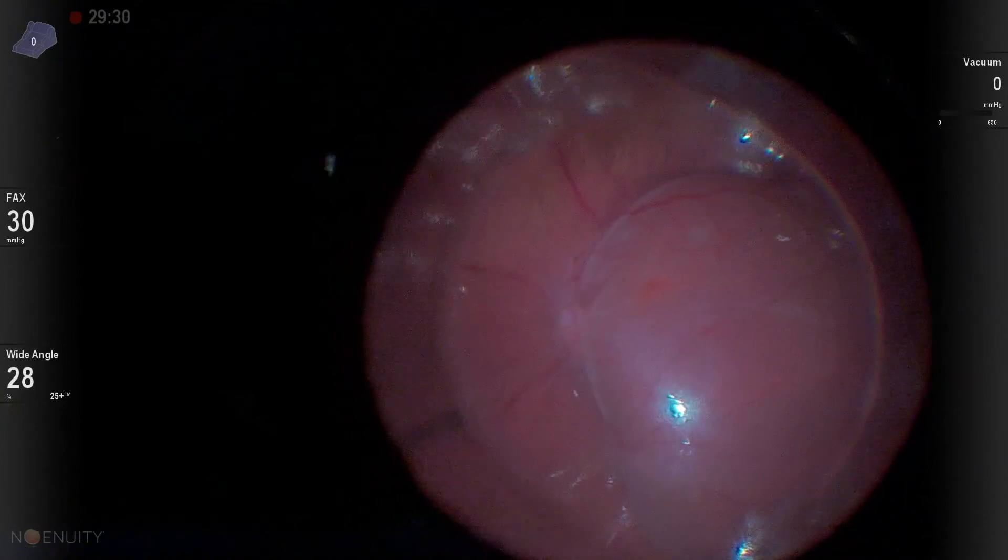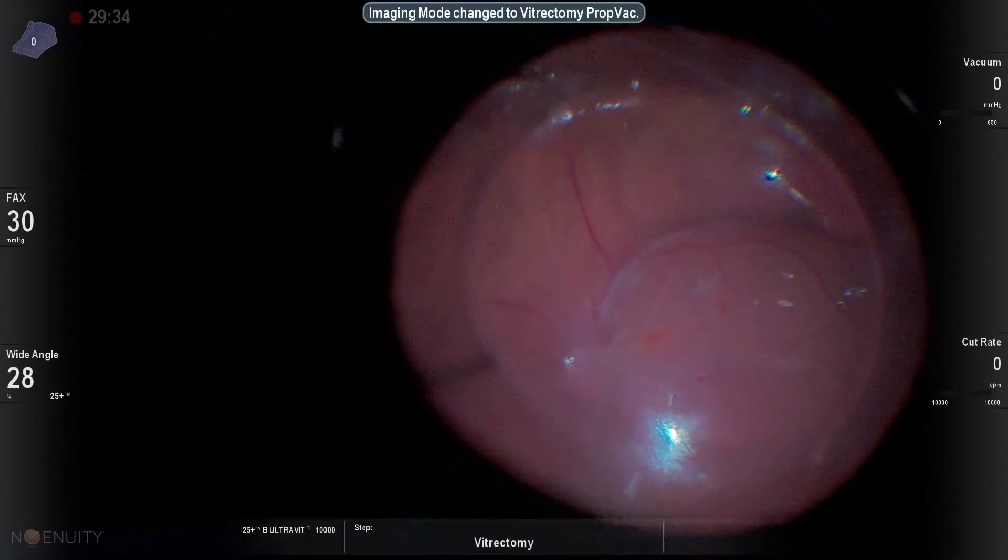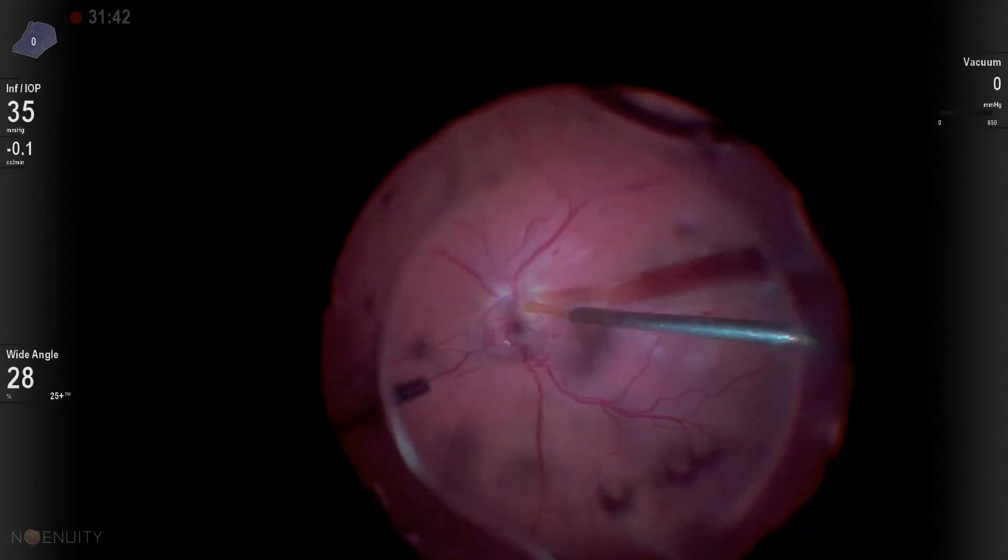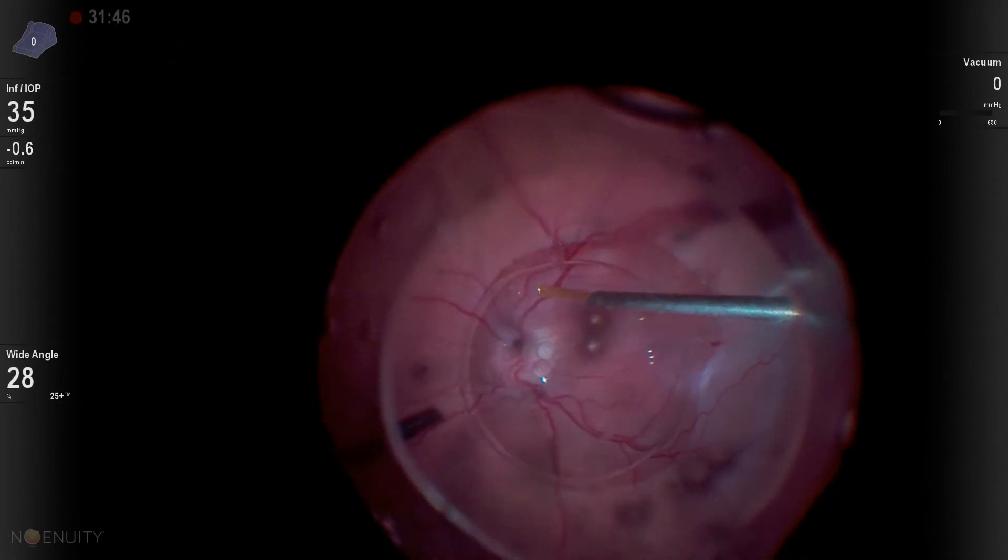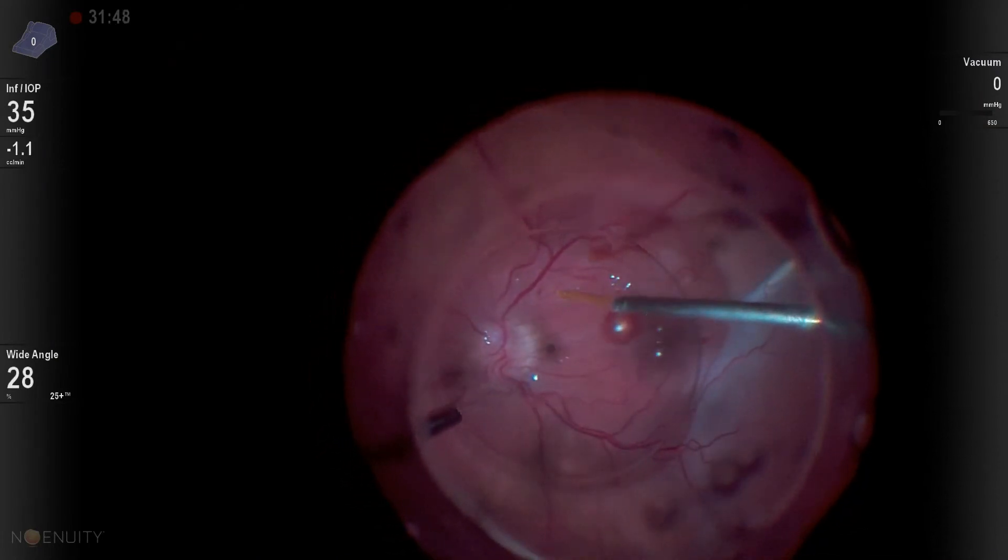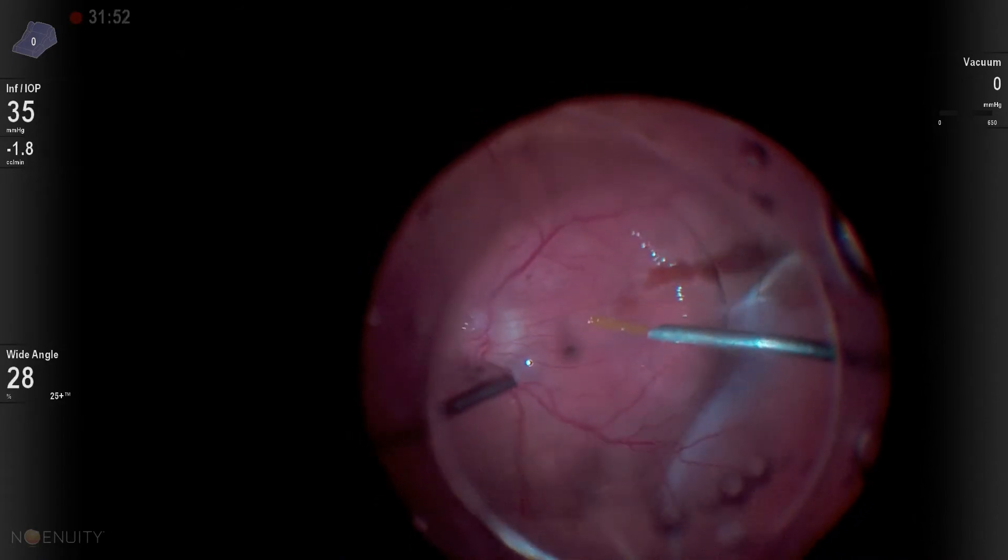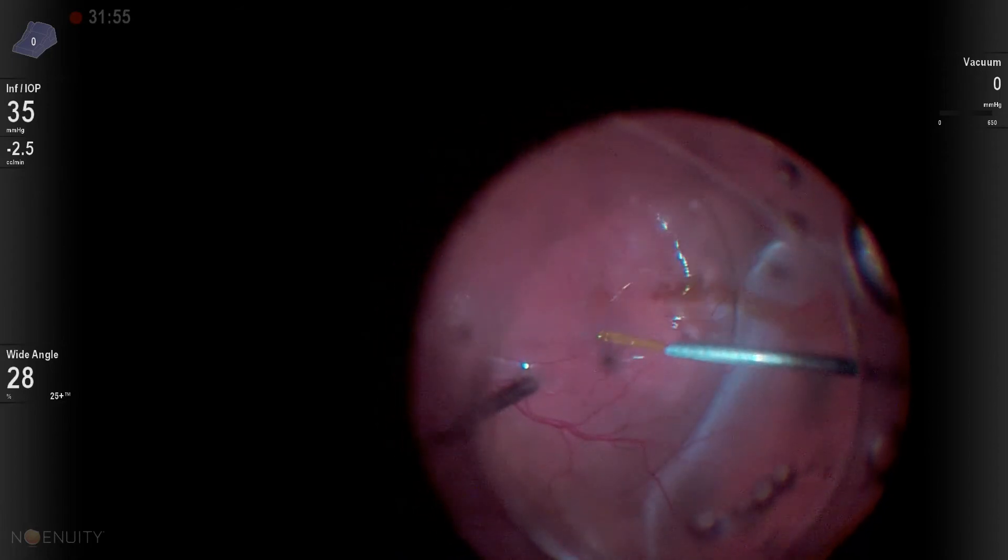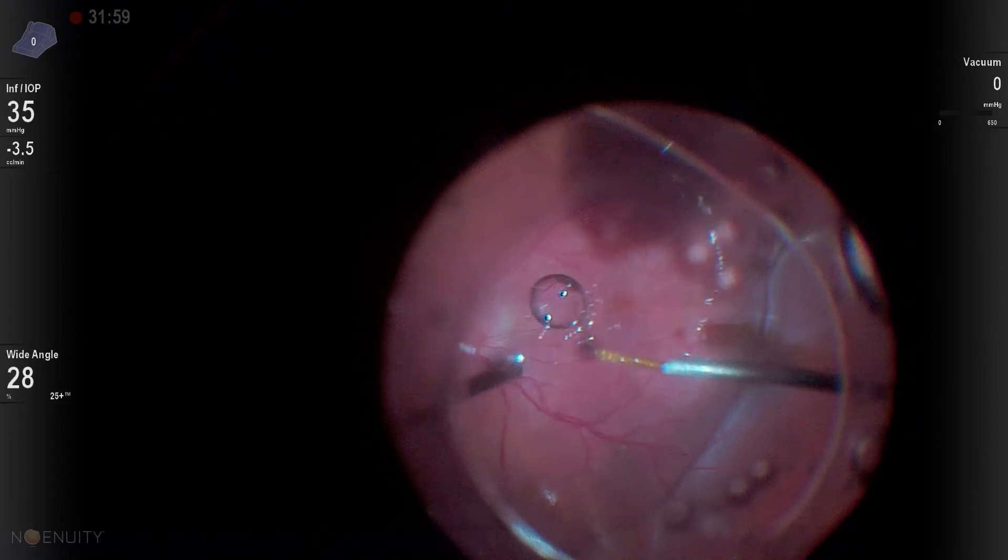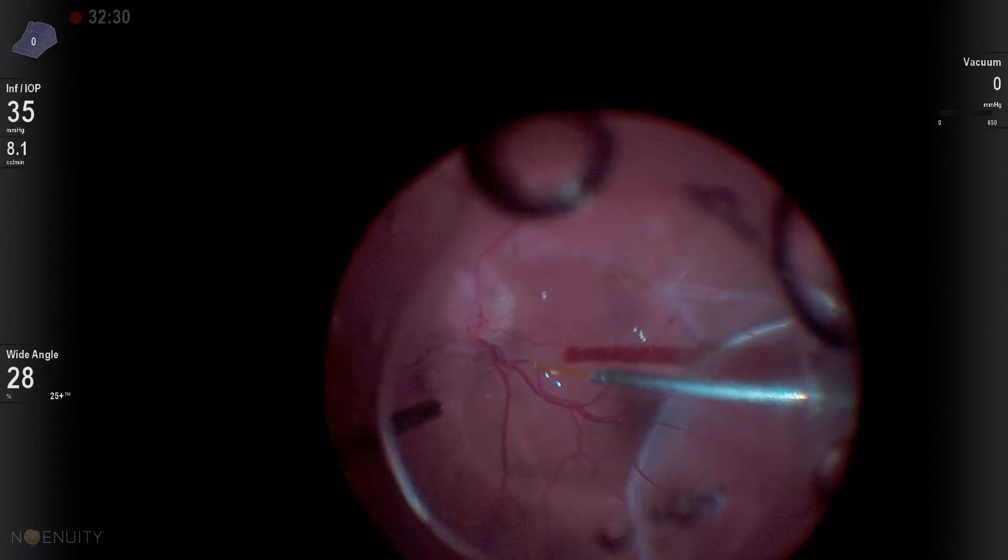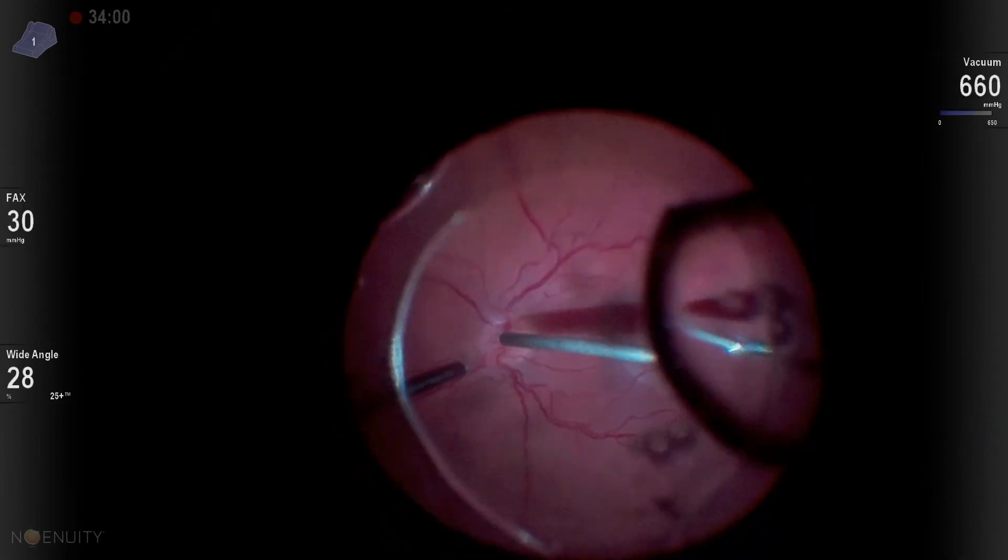But I've only partially peeled the internal limiting membrane. So I really want to finish that ILM peeling. And so we're going to finally go back in and we're going to inject some PFO over this area to push this retina, the subretinal fluid, out towards the periphery. And I had a unique opportunity to talk with several really excellent South American retina specialists, and they do a lot of peeling under PFO. And I learned a lot about how to peel under PFO and things like that.